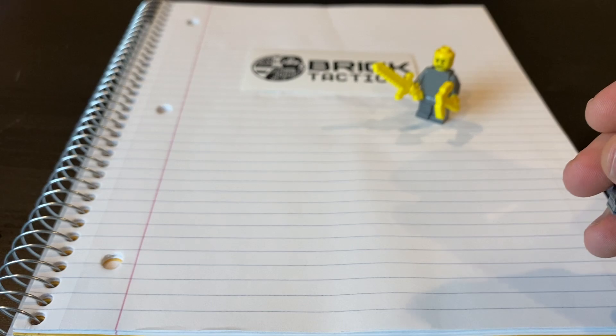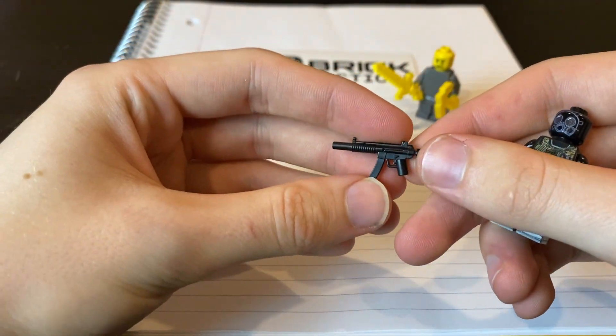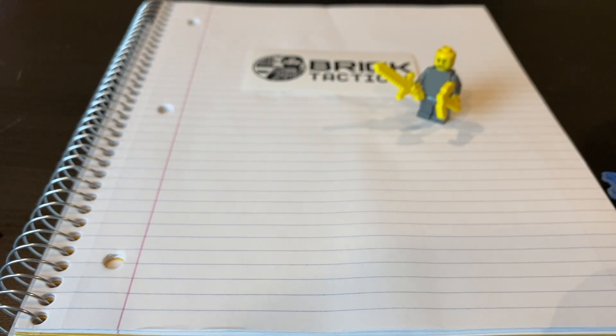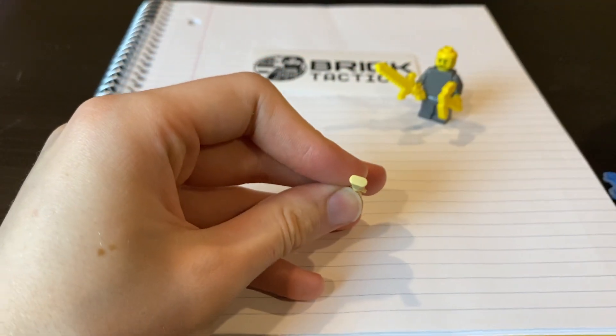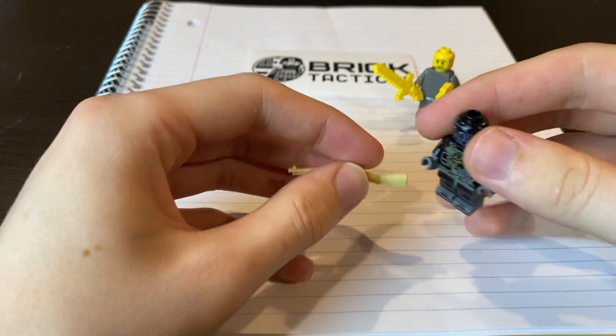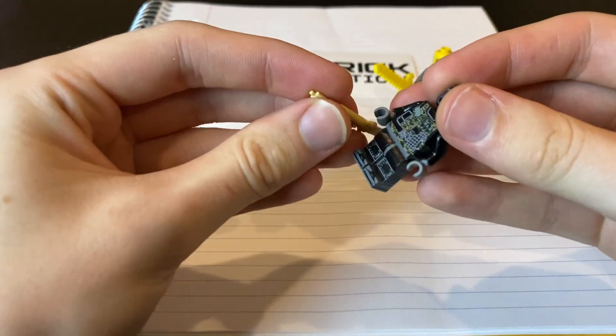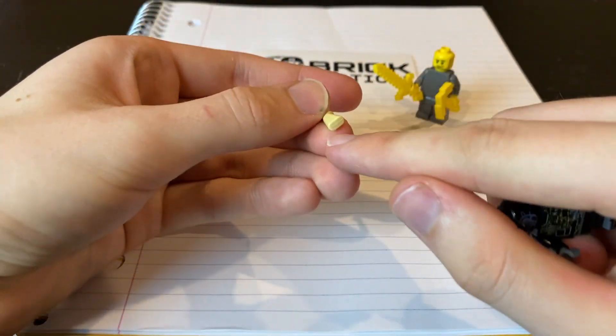So let's find another example. This is my MP5 SSD with collapsed stock. Same thing, bottom of the grip. Let's see if we can find another example. This is my M1 Grand. It's in the back of the stock. So you don't really see that because you hold it like this, you don't really see it. And then if you hold it like this, you're not going to see it at all. So that's the gate.